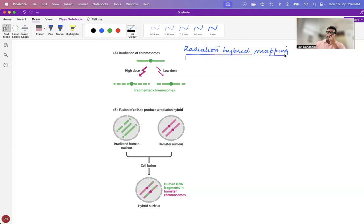Here, in radiation hybrid mapping, what we do is we take the human cell line and radiate it with x-rays. And the range of the rads we use is around 3000 to 8000 rads.